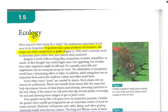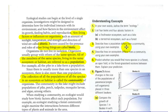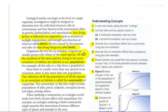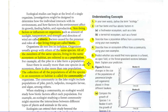For this section, title it 1.5 Ecology and answer these understanding concepts questions. Number one: in your own words, define ecology. Number two: list four biotic and four abiotic factors in a freshwater system such as a lake, or a terrestrial ecosystem such as a forest. Remember, abiotic means non-living, biotic means living. Number three: describe how a population differs from a community, using your own examples. Number four: describe how an ecosystem differs from a community, using your own examples. Number five: predict whether you would find more species in a forest, an open field, or the forest-grassland ecotone between the two, and explain your prediction.